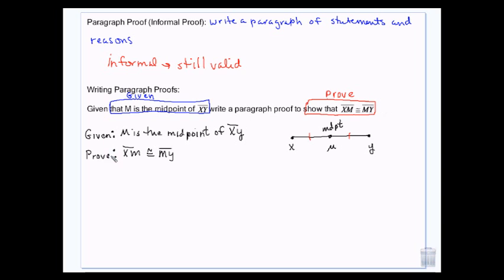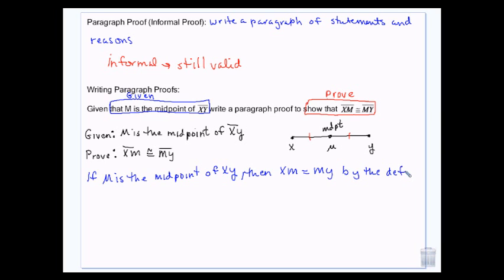I'm going to start my proof: if M is the midpoint of XY, then XM is equal to MY, by the definition of midpoint. This is my first statement, and I've restated my given. This is a statement, and that is the reason. I'll be doing a series of statements and reasons until I get to the end.